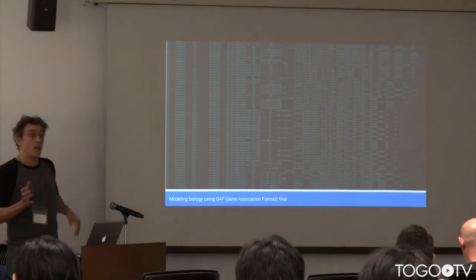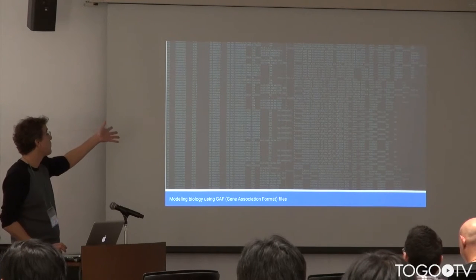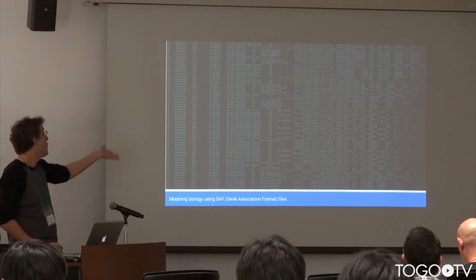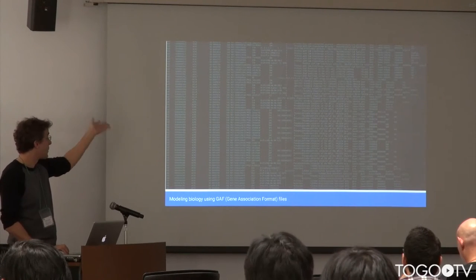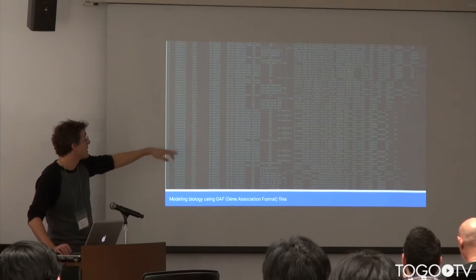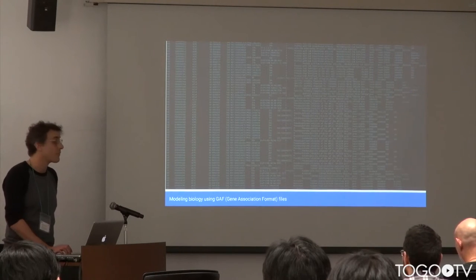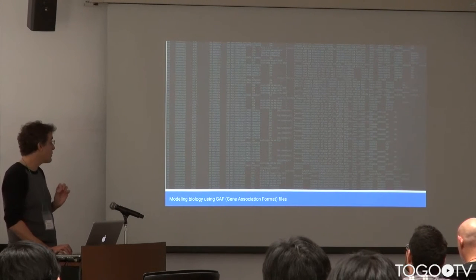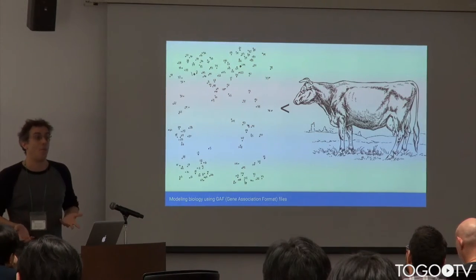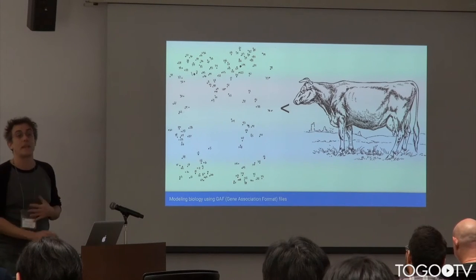Within the Gene Ontology Consortium, a lot of the model organisms, when they're trying to capture their annotation data and share with other people, they're using gene annotation format, which is this tabular, row-by-row format. You can see here we have a gene product, we have a GO term, there is provenance information, evidence information, dates, and so forth. But there's not really any good way of tying this together into a larger biological model. You have a lot of points of data, but you don't really get to tie all these different annotations together.